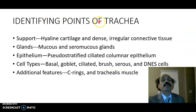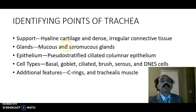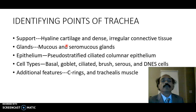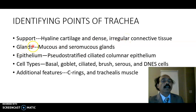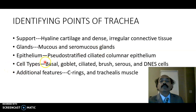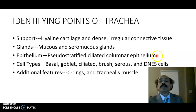What are the identifying points of the trachea? The trachea is supported by hyaline cartilage. Hyaline cartilage looks like glass — it's bluish in color and has isogenous groups of chondrocytes in it. Dense irregular connective tissue covers the hyaline cartilage as the perichondrium. We will also get mucous and seromucous glands. The epithelium is the pseudostratified ciliated columnar epithelium, also called respiratory epithelium.